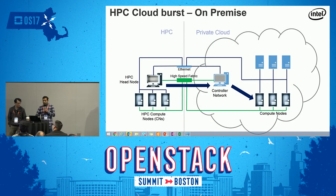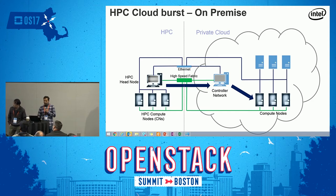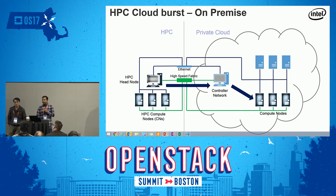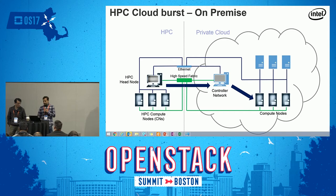Our second use case is cloud burst. In this scenario, the user has an HPC system on-premise as well as a private OpenStack-based cloud, both on-premise and connected with the same Ethernet switch and the same high-speed fabric. We instantiate more compute nodes from OpenStack and extend our HPC cluster with more compute capability, utilizing unused compute from the cloud — since HPC is CPU-hungry and memory-hungry.